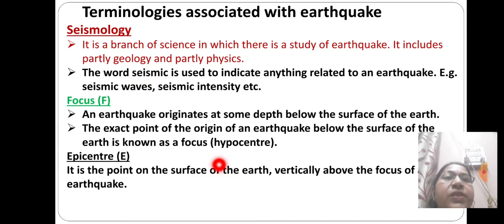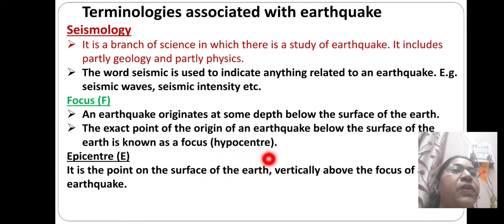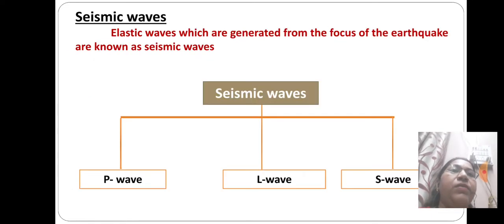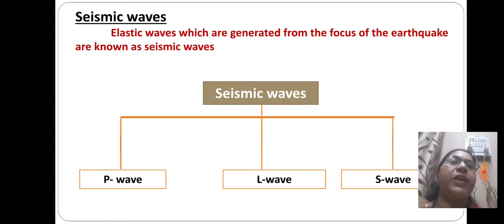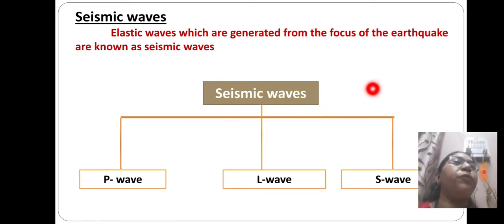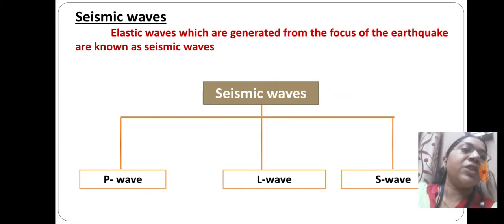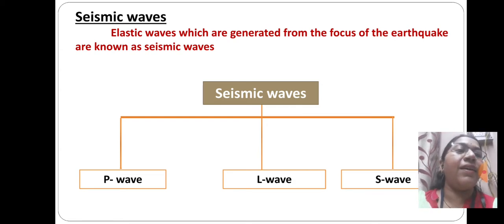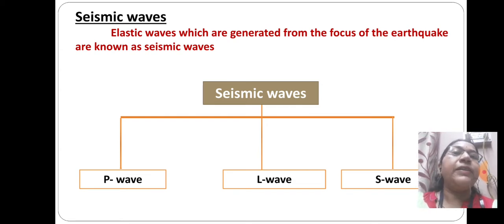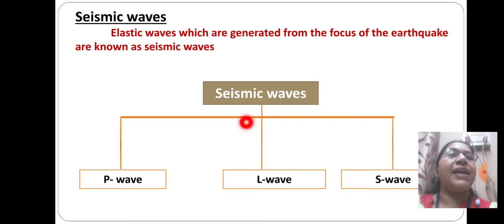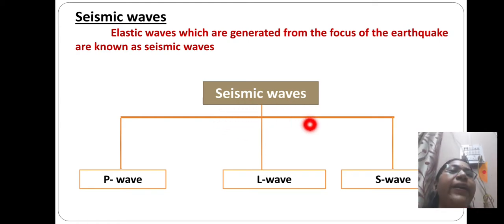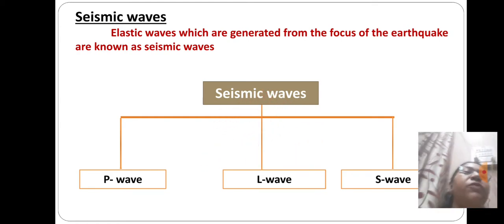The epicenter is the point on the surface of the earth vertically above the focus of the earthquake. Seismic waves are the elastic waves generated from the focus of the earthquake. There are three types of seismic waves: P waves, S waves, and L waves.